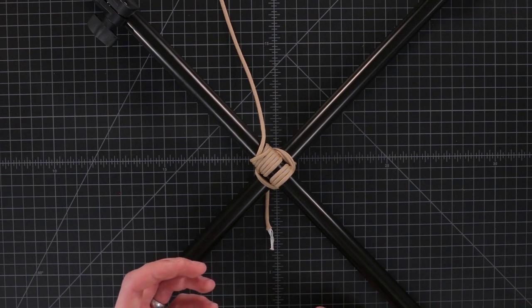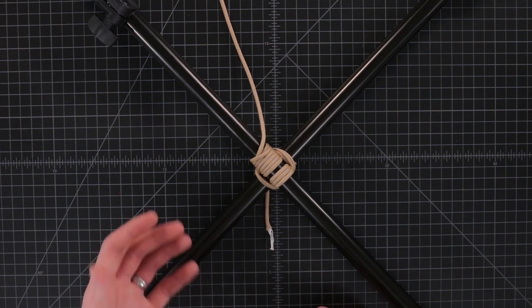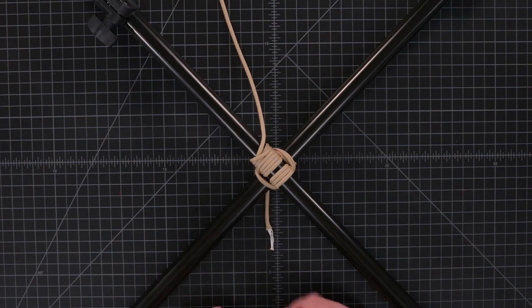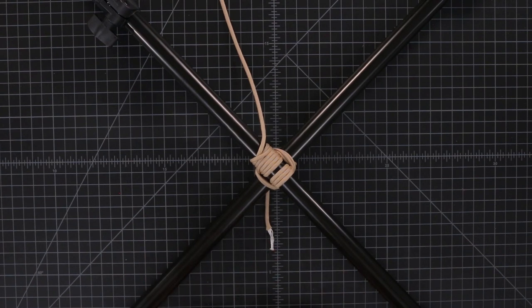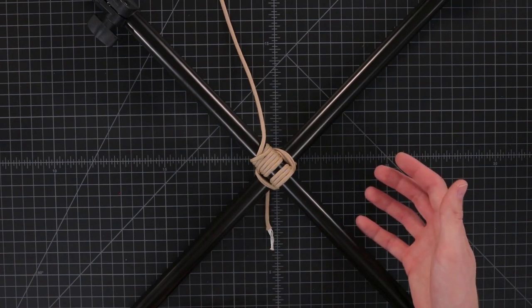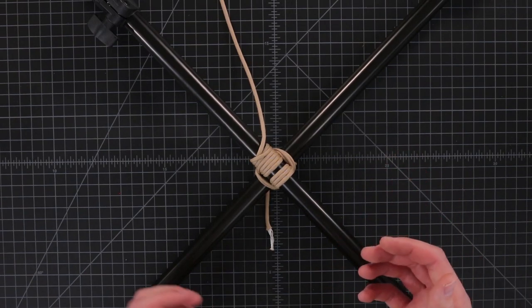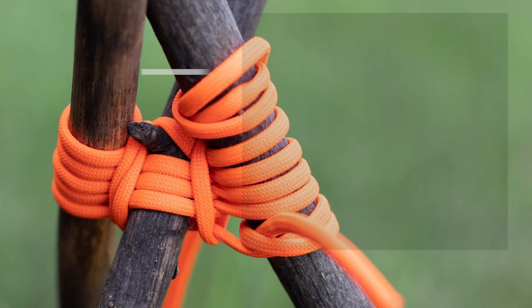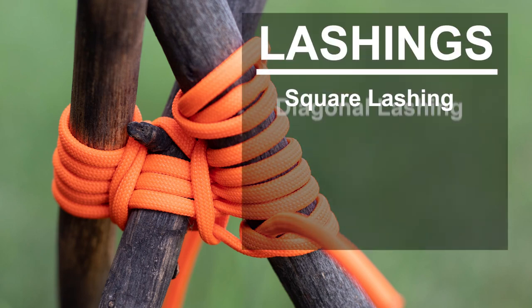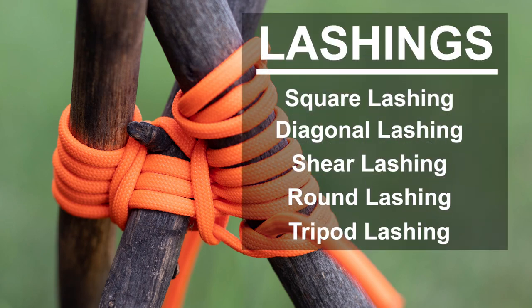Lashing knots are often seen in construction zones in India and Southeast Asia where they tie bamboo poles together to make scaffolding. Another area where you will see lashing knots in use is in what's called pioneering where people as part of survival training will lash poles together to be used as a cooking tripod over a fire or to construct primitive shelters.